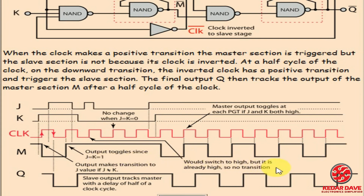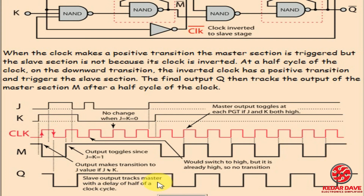If the output would switch to high but is already high, there is no transition. You can see conditions where one state is high and the other is low, so no transition is possible. The slave output tracks the master with a delay of half a cycle. That is the main idea behind the master-slave flip-flop.